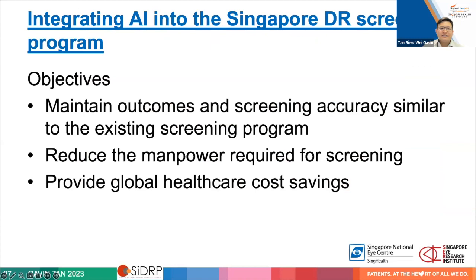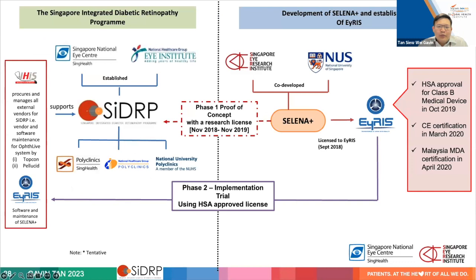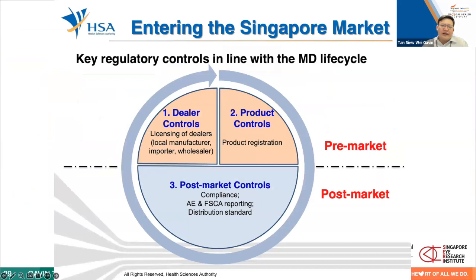Once you have an AI algorithm, you need to figure out how to use it — something published in a paper is of no use if it doesn't help patients. Our objectives for integration were: ensure screening accuracy was similar to the existing program, demonstrate reduced manpower requirements, and look at cost savings. The implementation process was not straightforward — we had to get HSA approval as a medical device, which an academic institution generally cannot do alone, so the licensing was spun off into a startup company that handled all the compliance and regulatory requirements.